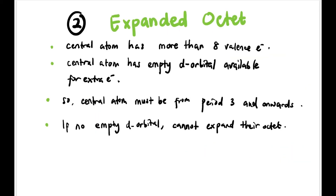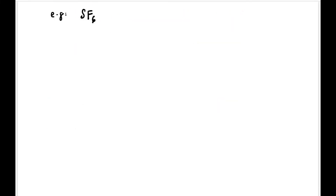Moving on to the next exception: expanded octet — more than 8 valence electrons on the central atom. This happens because the central atom has empty d orbitals available for extra electrons. This applies to elements in Period 3 and below, since without d orbitals, the octet cannot be expanded.